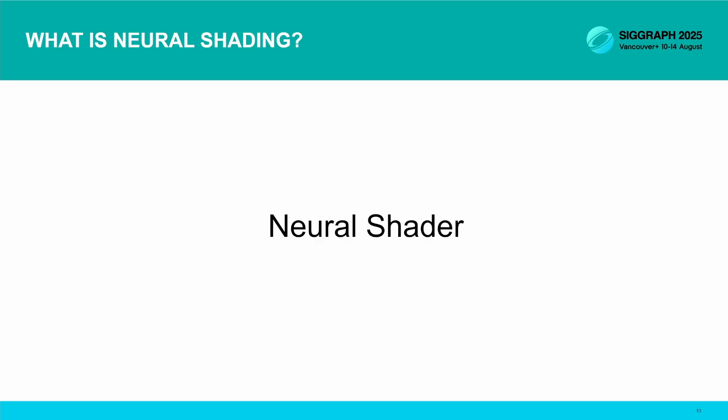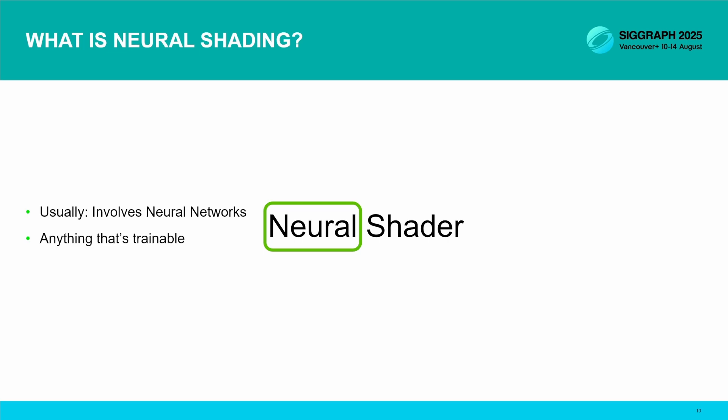So what is neural shading? What's a neural shader? From the first word, you might guess that neural networks are involved — and this is usually the case — but we're bending the terminology a little to include any part of your renderer that is trainable, even when it's not neural. As we'll see later, having shaders that you can optimize is useful all by itself, even when they're not neural. Second, these are shaders — they're not a separate CUDA pass that comes after your renderer. These run inside the rendering pipeline as part of your normal shaders. You can use this inside a compute pass or in ray tracing.